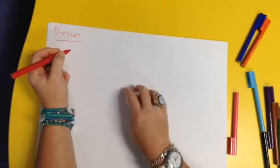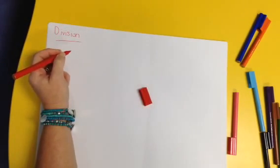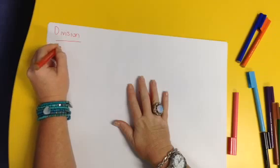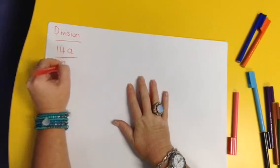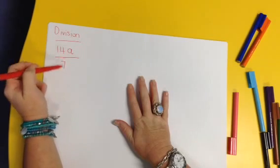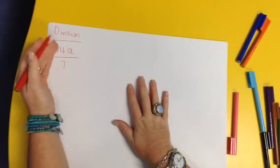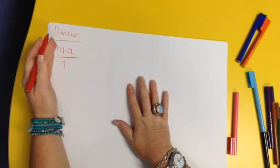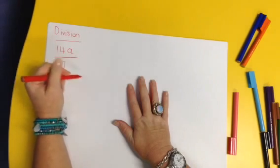Okay, so this is your division. If we have a look at an example like 14a over 7, now you know that this line means divide, so it's 14a divided by 7.